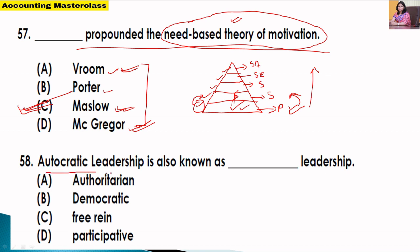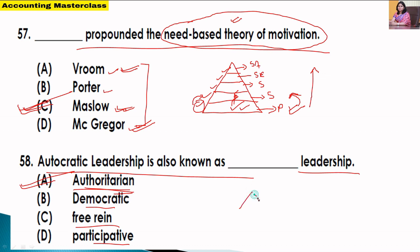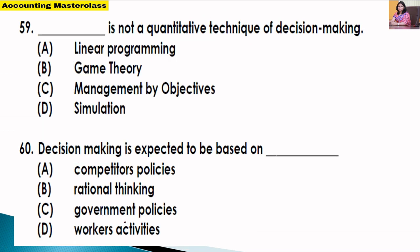What is Autocratic Leadership? The options are authoritarian, democratic, free reign, or participative. Autocratic leadership style is also called authoritarian leadership style. The three main leadership styles are democratic, authoritarian, and free reign. Option A — authoritarian — is the correct answer.